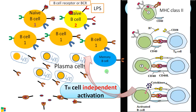T helper cell dependent activation is more effective, and as memory cells are produced, when the same pathogen comes a second time, memory B cells recognize the pathogen very easily and the response is very quick, clearing the pathogen soon. These are the two pathways mediated by B cells.